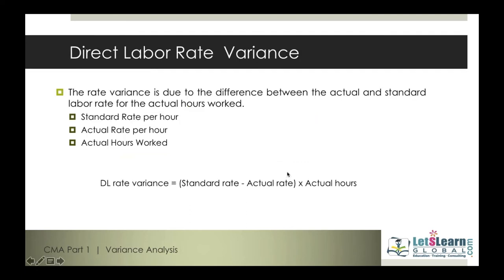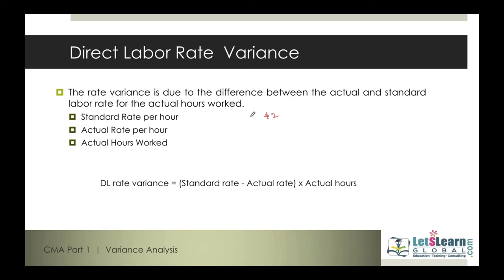Direct labor rate variance is the variance that takes place when the actual rate paid to the laborers is different from the standard rate. The rate variance involves three components: what is the standard rate allowed per hour, what is the actual rate paid, and how many actual hours were worked. Say for example our company pays $2 per hour — this is the standard rate.